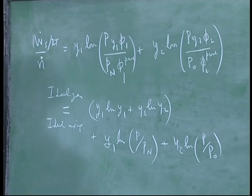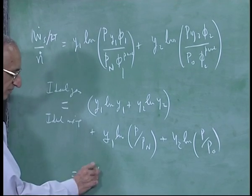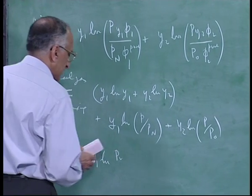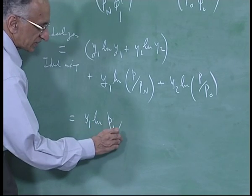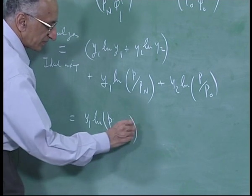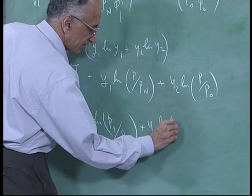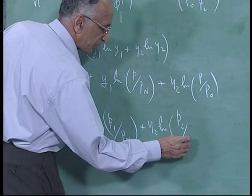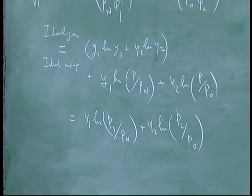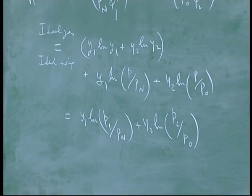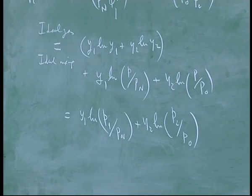Then you have y1 log y1 plus y2 log y2. It is also written slightly differently. It is P1. P1 is partial pressure of 1 in the mixture. P2 is partial pressure of 2 in the mixture.